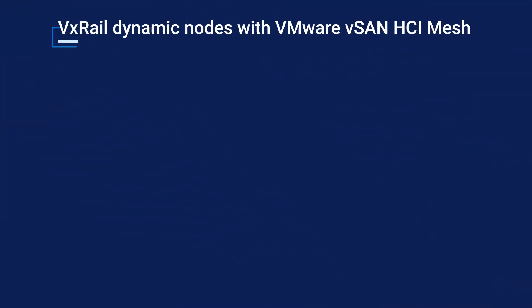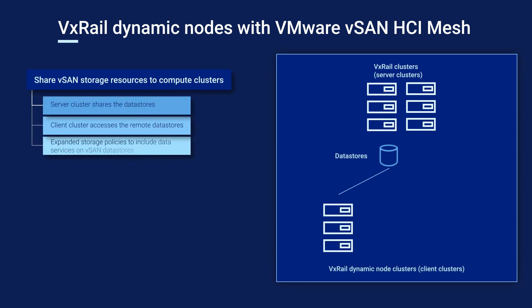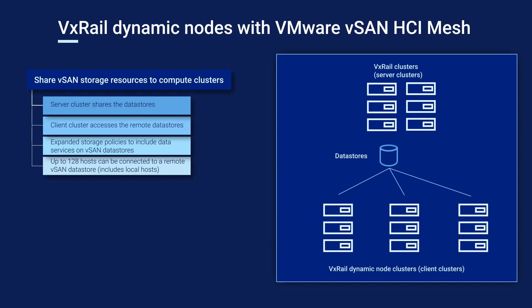Let's take a look at three different use cases, starting with vSAN HCI Mesh. With VxRail Dynamic Nodes, VxRail can now operate as both the server cluster and client cluster. Standard VxRail clusters with vSAN can share their data stores with VxRail Dynamic Node compute-only clusters. A vSAN data store can connect to up to 128 hosts, and a dynamic node cluster can also connect to multiple data stores. A VxRail administrator can use storage policies to select the appropriate data store in vCenter, based on the customer's preferred data services and protection levels.